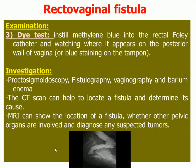Investigations for rectovaginal fistula include: colonoscopy, flexible endoscopy, fistulography, vaginography, and barium enema. As seen in the picture, the barium passes through the fistula from the rectum to the vagina. CT scan can help to locate the fistula and determine its cause. MRI can show the location of the fistula, whether other pelvic organs are involved, and diagnose any suspected tumors.